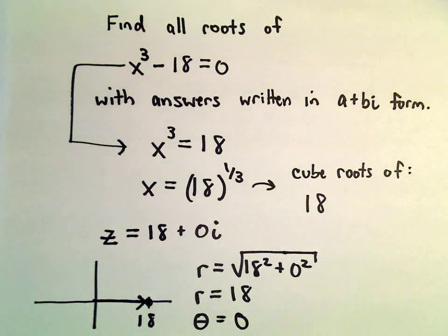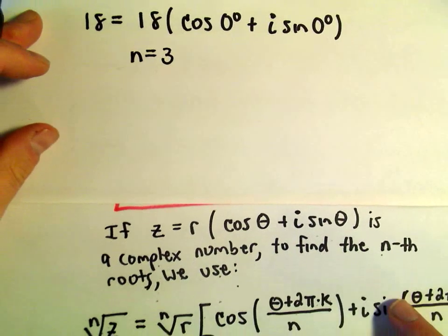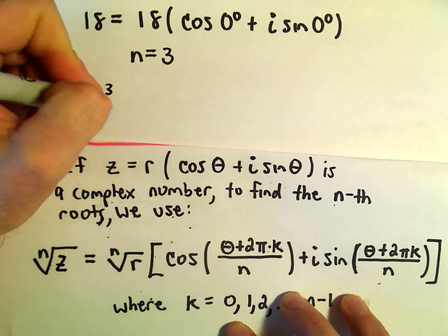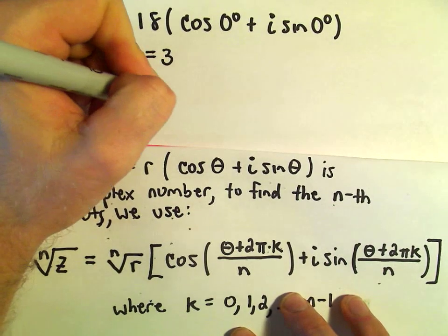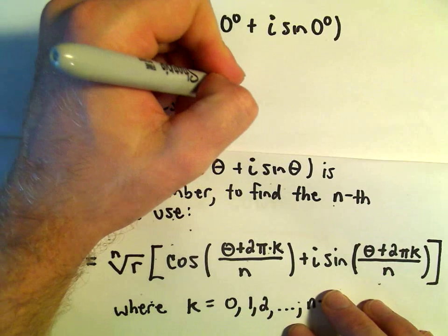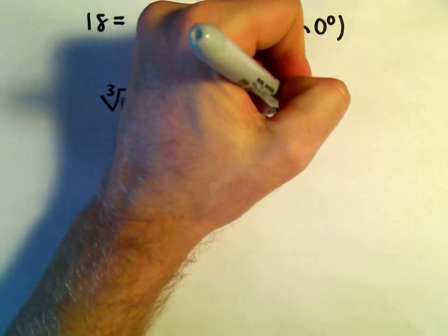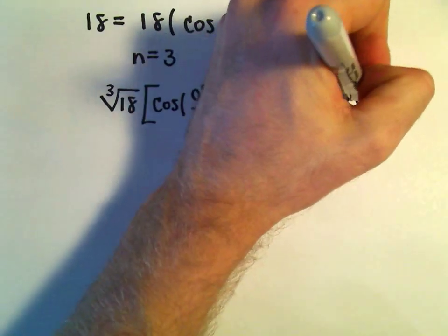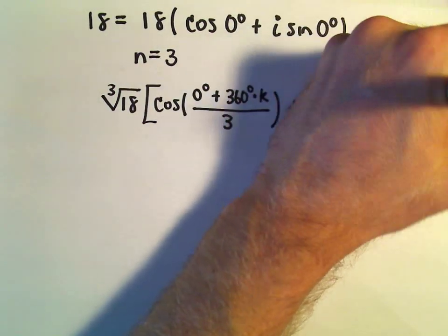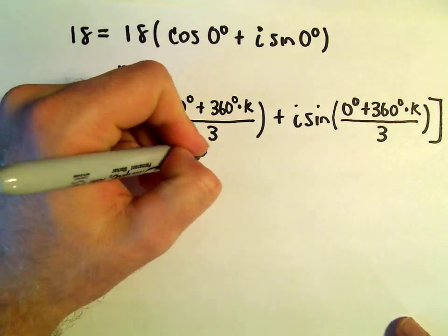Now we'll use our formula. Since we're finding cube roots, we use n equals 3. Our formula gives us the cube root of 18, then cosine of (0 degrees plus 360 degrees times k) over 3, plus i sine of (0 degrees plus 360 degrees times k) over 3. Since n equals 3, we'll plug in k equals 0, 1, and 2.